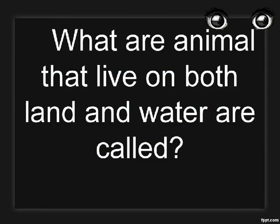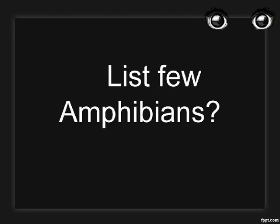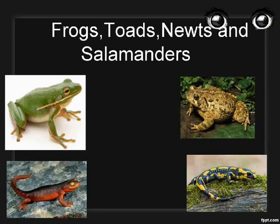What are animals that live on both land and water called? Amphibians. List a few amphibians: frogs, toads, newts, and salamanders.